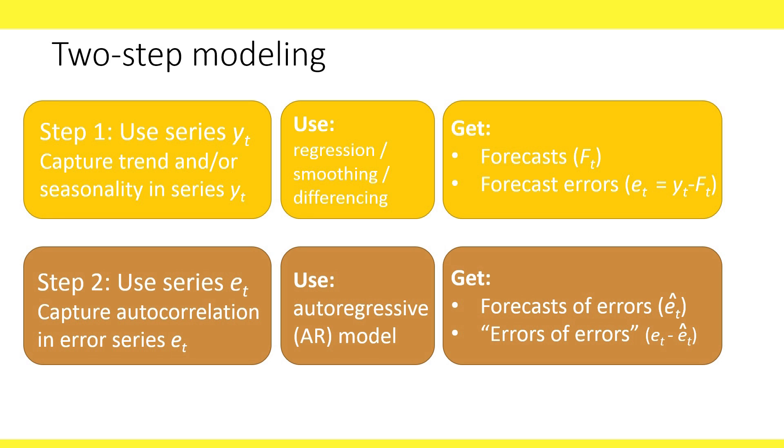Next, in step two, we use the series of forecast errors, E_t. We then fit an AR model to this error series and use it to generate forecasts for the forecast errors. These forecasts are denoted E-hat_t. This means that the step two forecasts how wrong our step one forecast will be. Finally, we can also compute the errors of errors, which are the difference between our predicted forecast error and their actual values.